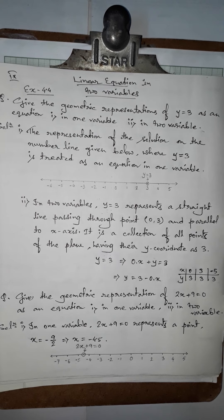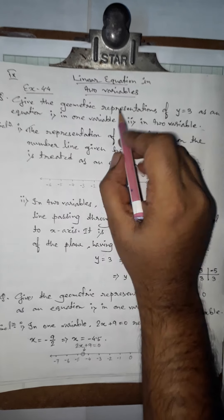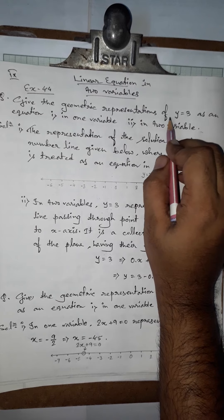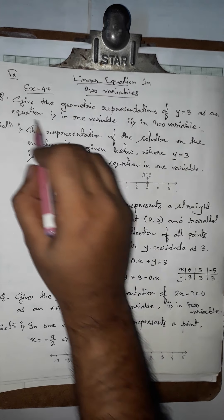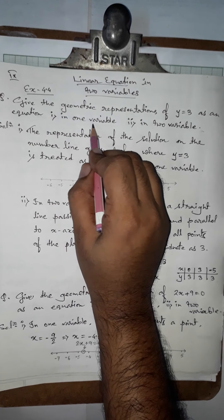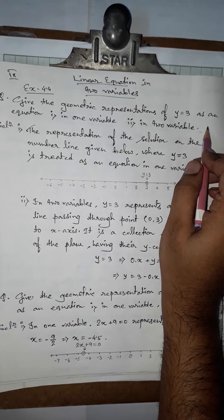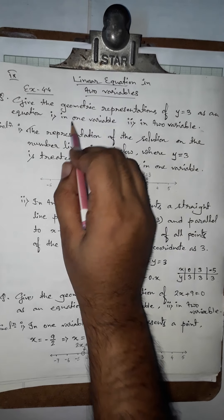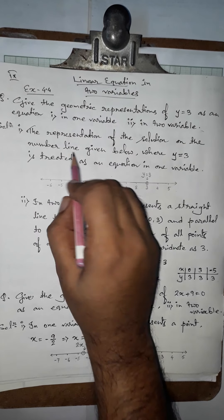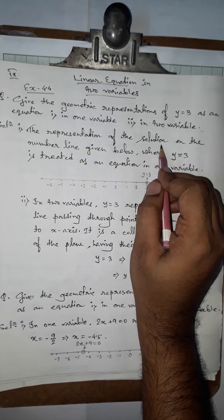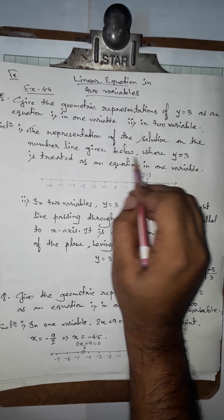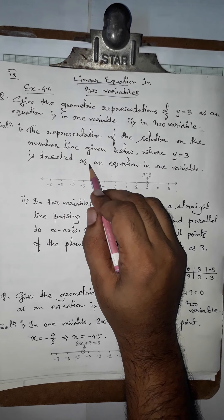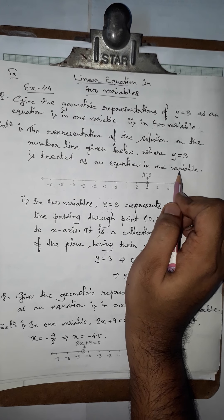The first problem is: give the geometric representation of y equals 3 as an equation in one variable and in two variables. So first we will represent y equals 3 in one variable. The representation of the solution on the number line is given below, where y equals 3 is treated as an equation in one variable.